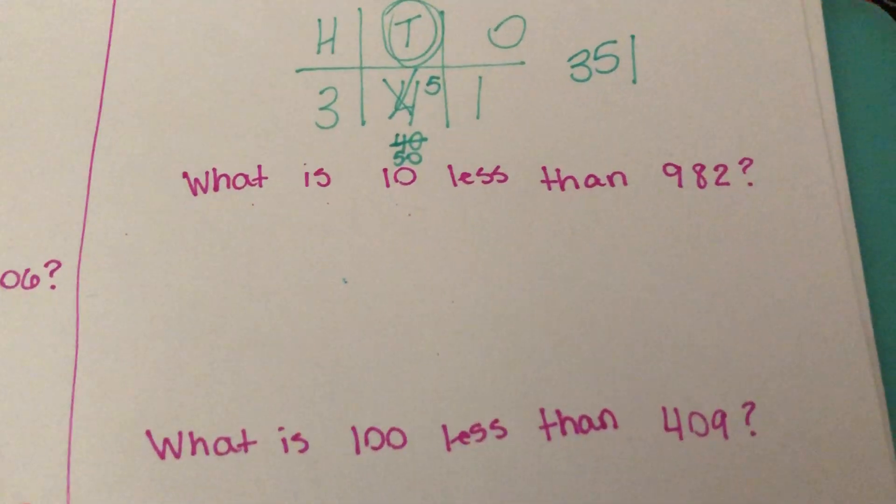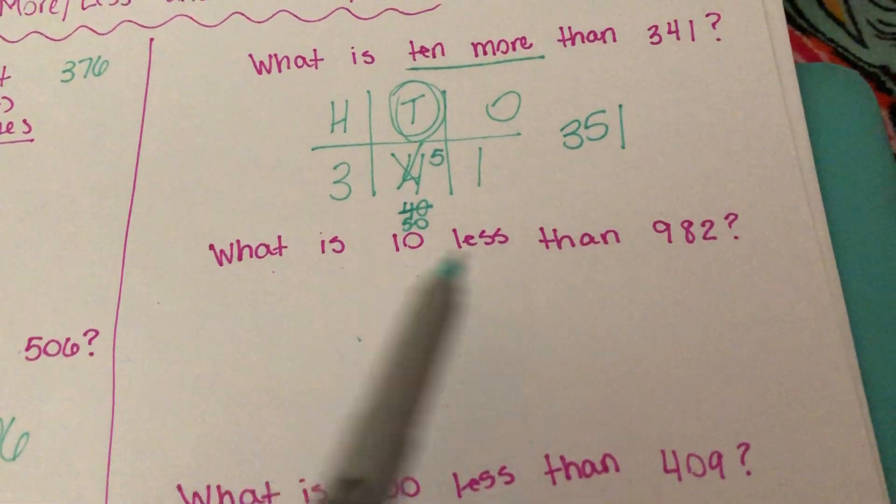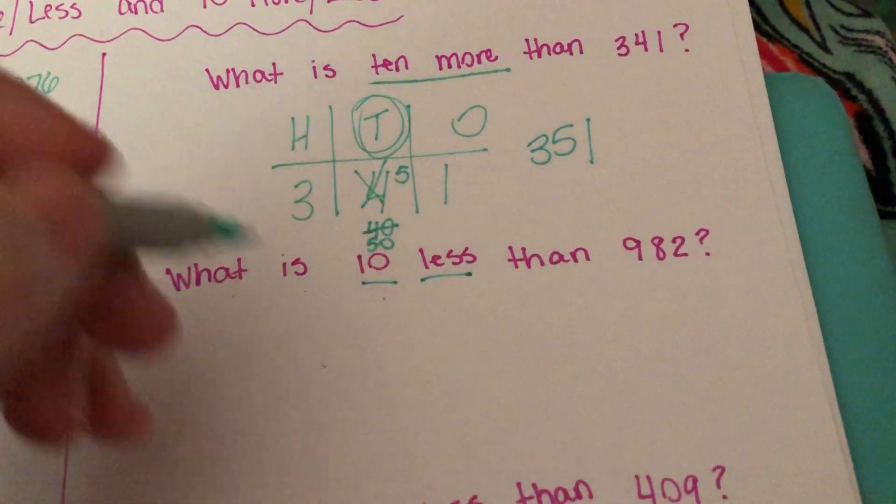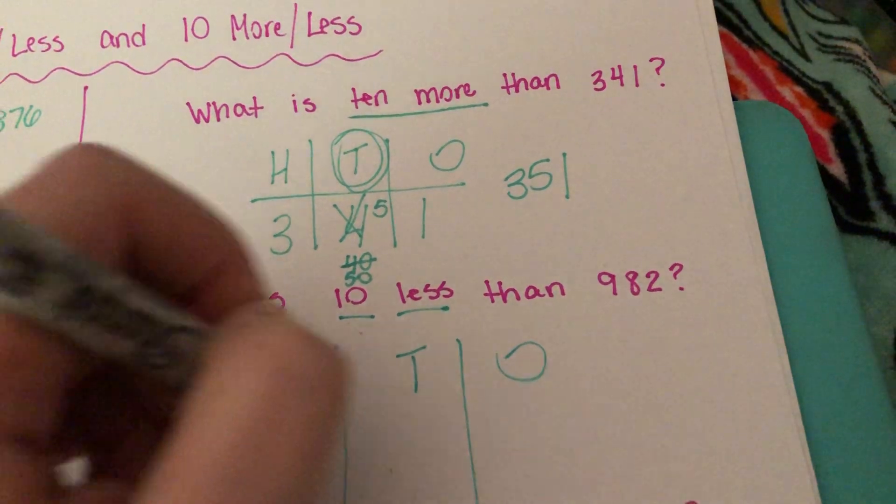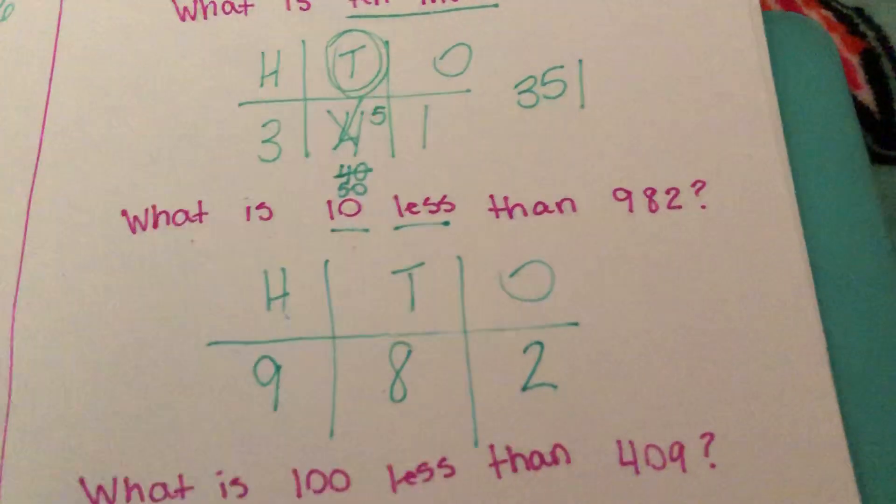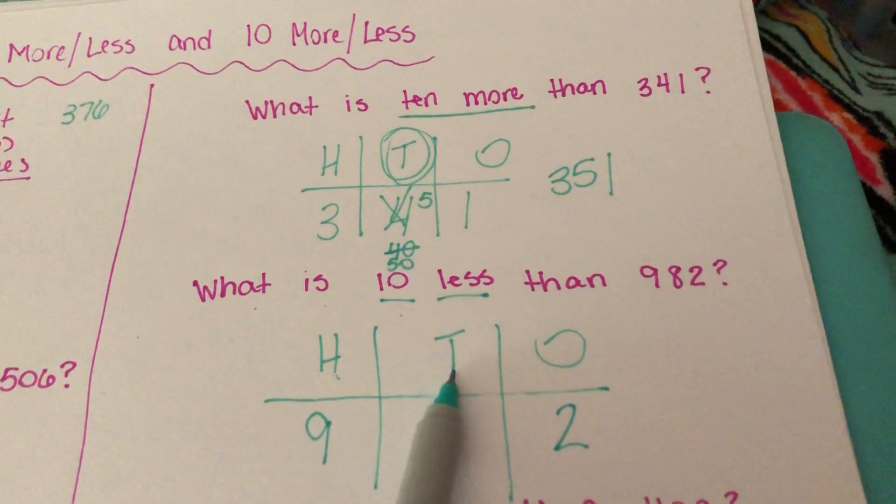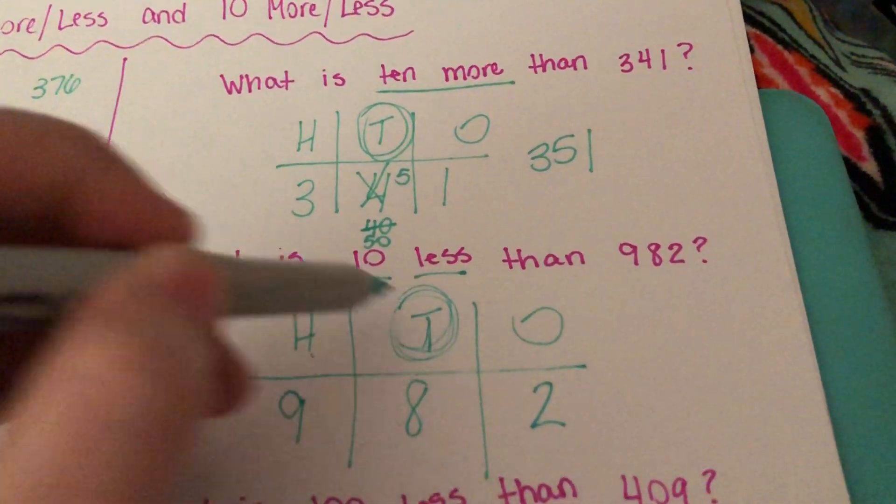Next question. What is 10 less than 982? First step, what are we looking for here? We're looking for 10 less. Let's draw our H-T-O chart. Let's get that place value chart drawn. Insert our 982 for 982. Now, are we looking for the hundreds or are we looking for the tens? We're looking for the tens. We need to focus in on this box. Nothing changes here. Nothing changes here.